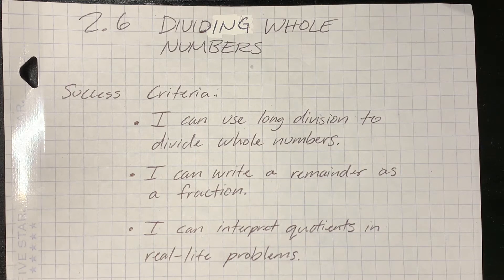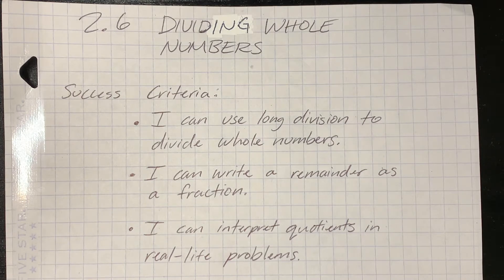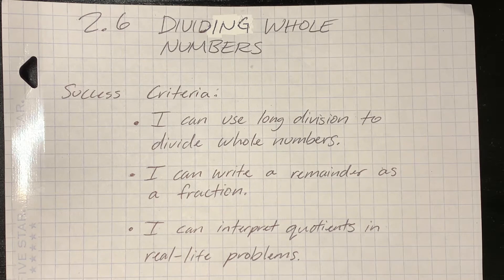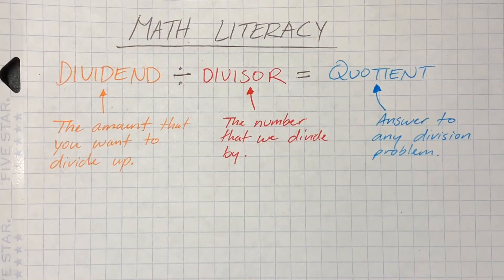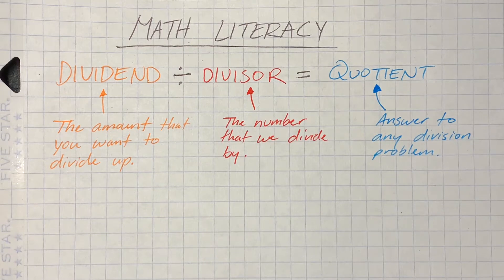Our success criteria for 2.6 is that you're going to be able to use long division to divide whole numbers, write remainders as a fraction, and interpret quotients in real life problems. What I mean by interpret is that you make sense of division. Let's talk about mathematical literacy: a dividend is the amount that you want to divide up, the divisor is the number that you want to divide by, and the quotient is the answer to any division problem.